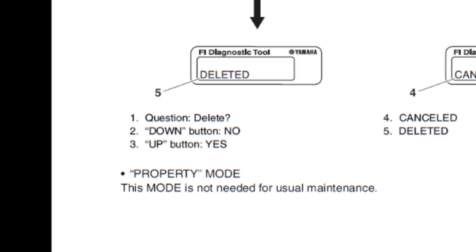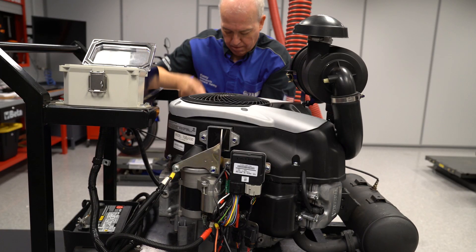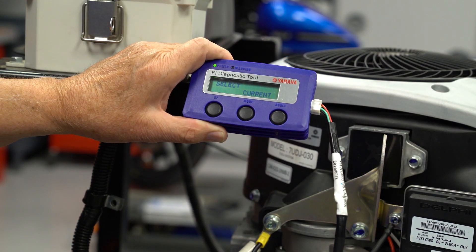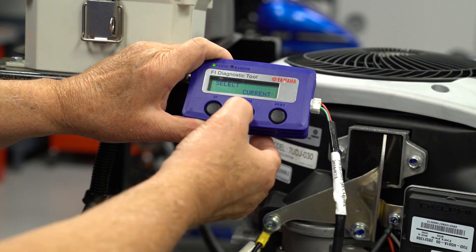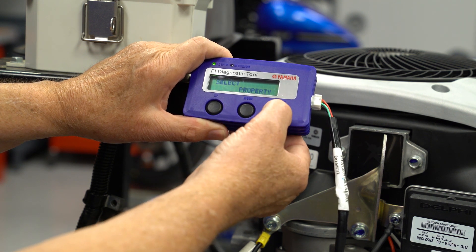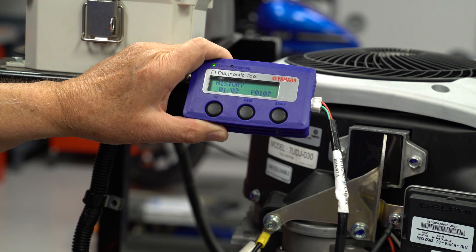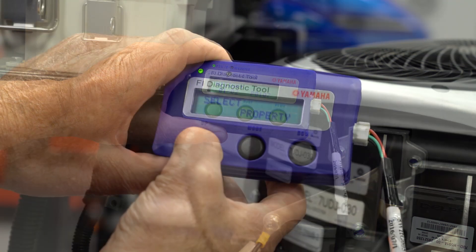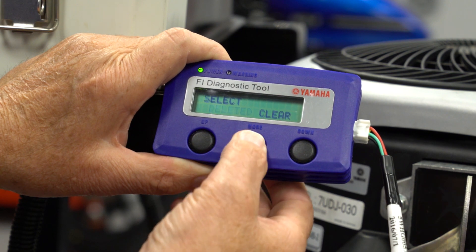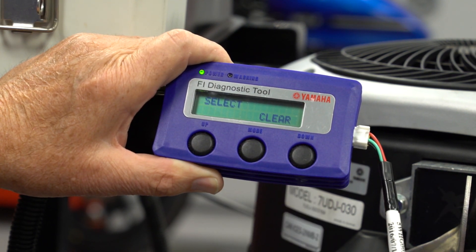An important point about current and history: all repairs should follow this order. First, repair the failure, then cycle the main switch off and then back on and start the engine. The ECU will see the circuit is fixed or see the correct voltage value and move the code into history. Then the last step is to delete the error code from history. Old codes in history can confuse you — there is no time or date stamp on the history code, so you can't tell if the error code in history was from yesterday or one year ago.